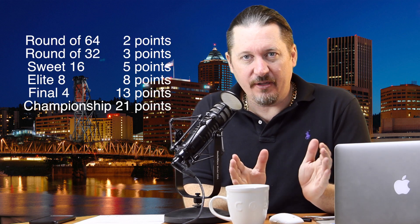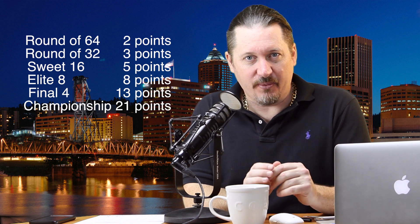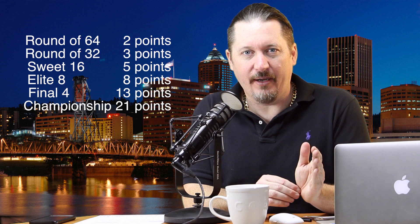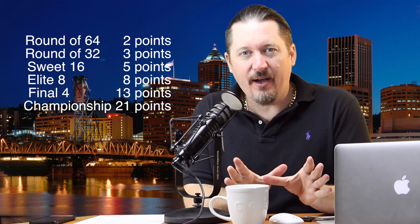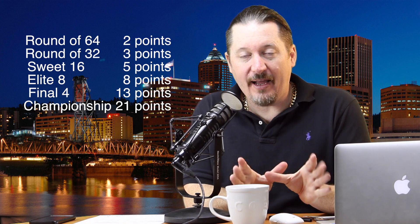Essentially, I'm using the Fibonacci sequence as a base multiplier for each round. The first round is worth two points if you get it right and it's a favorite. Second round, three points if it's a favorite. So for each round, you will get that number of points. And there is an upset bonus.